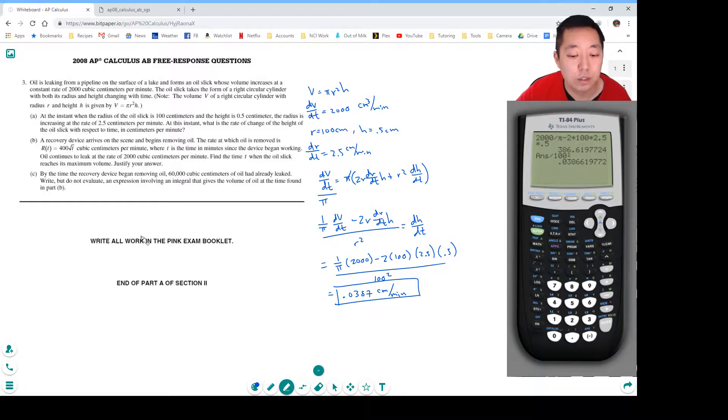Okay, Part B. Let me erase this bottom part here. A recovery device arrives on the scene and begins removing oil. The rate at which oil is removed is R of t, where t is the time in minutes since the device began working. Oil continues to leak at a rate of 2,000 cubic centimeters per minute. Find the time t when the oil slick reaches its maximum volume.